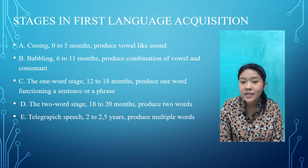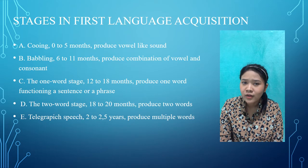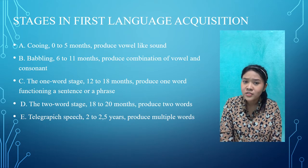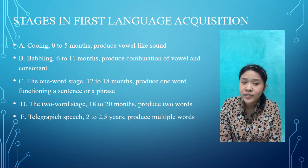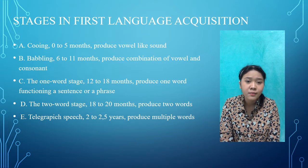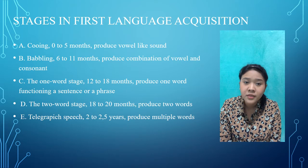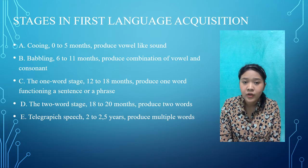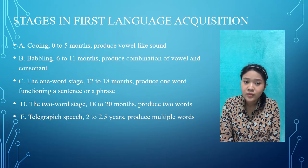The last stage is telegraphic speech, between two to two and a half years old. Children produce multiple words such as 'cat drink milk' and 'daddy go bye-bye'. The child starts to develop sentence-building capacity, with grammatical inflections and simple prepositions beginning to appear, and over time they continue to grow closer to adult language.